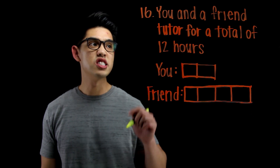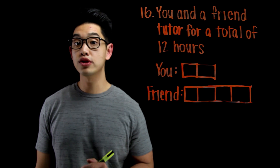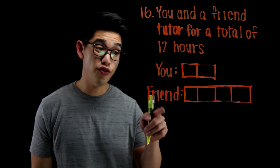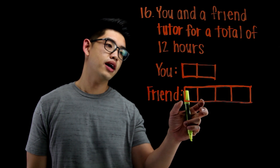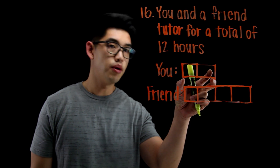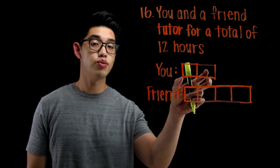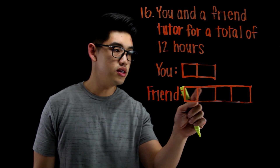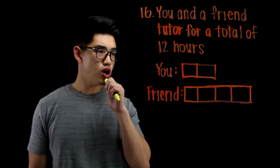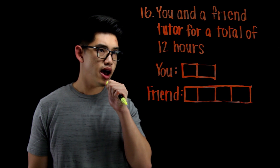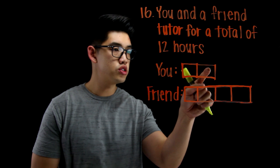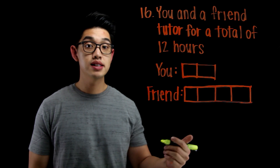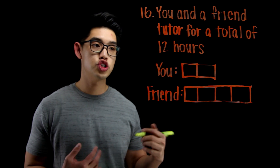For number 16, it says you and a friend tutor for a total of 12 hours. If you take a look right here, you don't tutor as much as your friend. Your friend tutors a lot — he tutors twice as much as you do. So we need to figure out what these values are so that they add up to 12. I see that I have 1, 2, 3, 4, 5, 6 — I have 6 boxes. So 12 divided by 6 means each box is worth 2 hours.